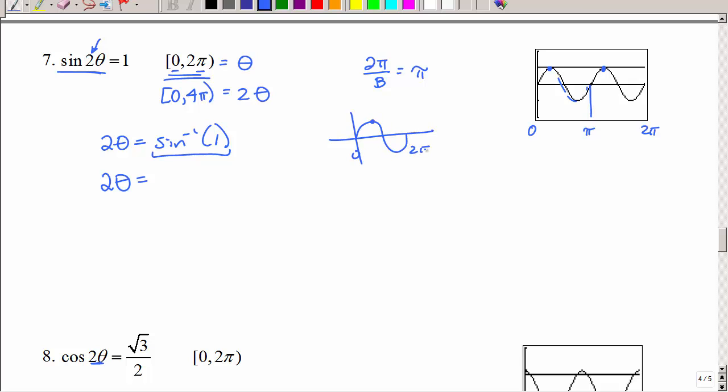Between 0 and 2 pi, it's equal to 1 at pi over 2, but this is 2 pi. So I need to go around the circle again, and I would get 5 pi over 2. Now, the last step you're going to do is divide by that coefficient of theta. So if I divide these by 2, I'm going to get pi over 4 and 5 pi over 4. That's pi over 4. That's 5 pi over 4. Be careful.